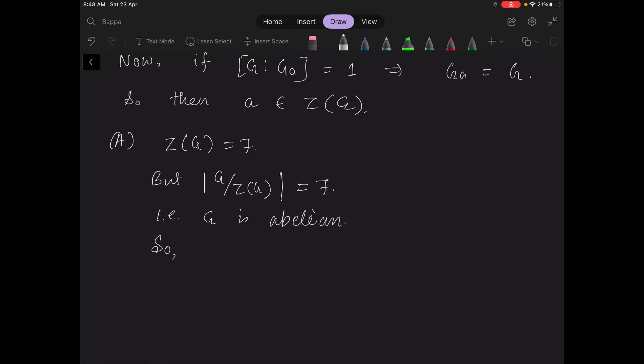So the class equation of G will be equal to 1 plus 1 plus 1, this is fourteen times.